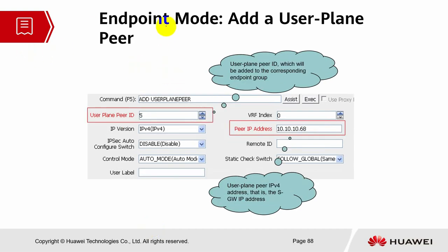Next is user plane peer. User plane peer is referring to your S-Gateway IP, so we need to add the peer ID and the peer IP address, which refers to the S-Gateway IP. Auto mode indicates that the signaling will be added automatically.